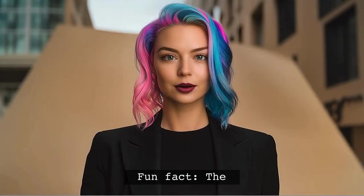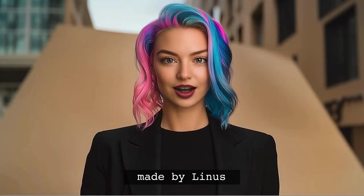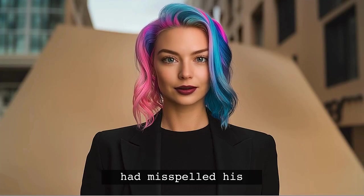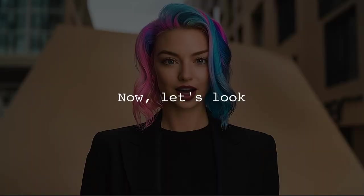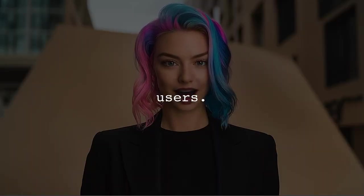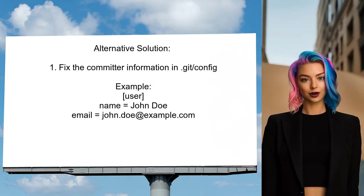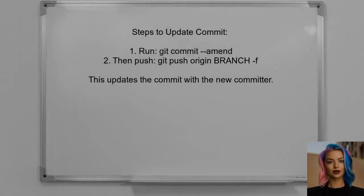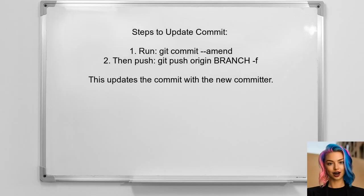Fun fact: the first commit in git history was made by Linus Torvalds himself. Imagine if he had misspelled his name — what a different history we might have. Now let's look at the answers provided by other users. One alternative solution is to fix the committer information in your git configuration. The committer is different from the author and is stored in the .git config folder. You can use the command git commit --amend to update the commit with the corrected committer details.